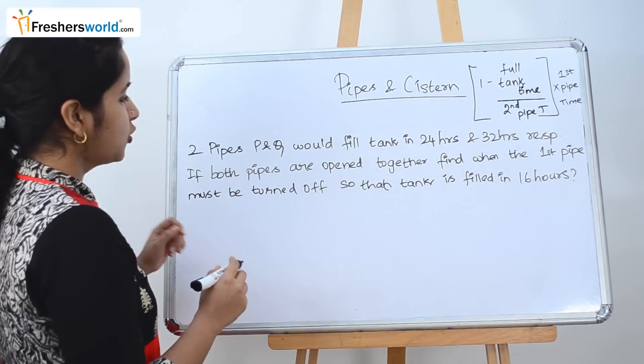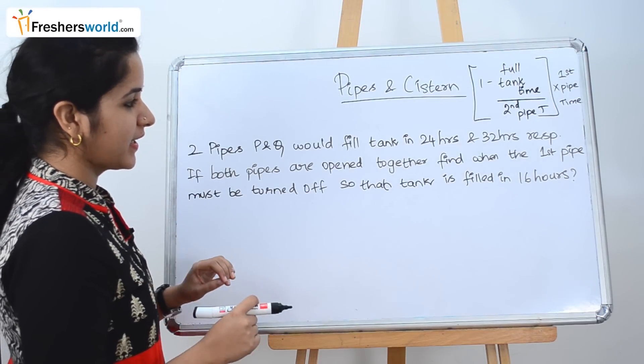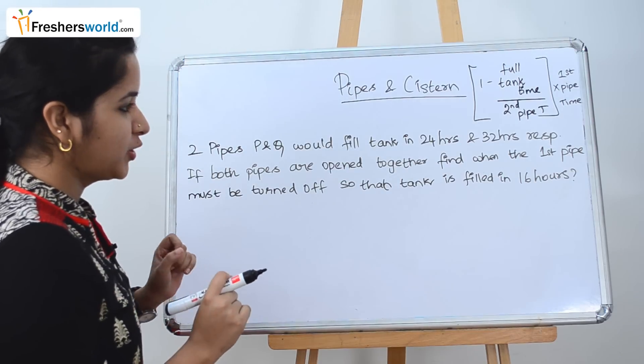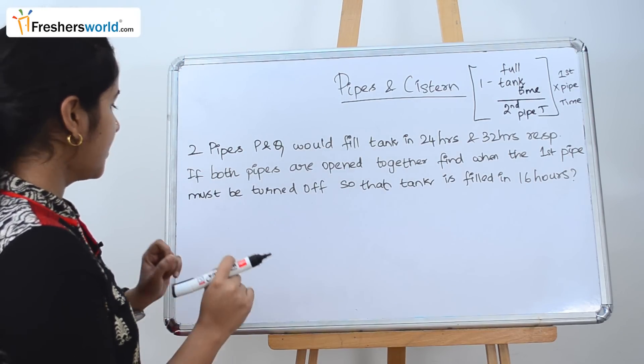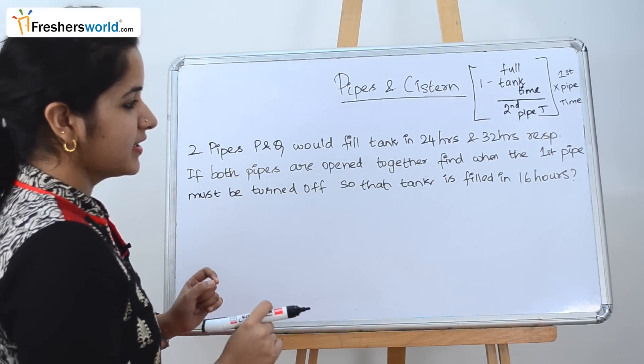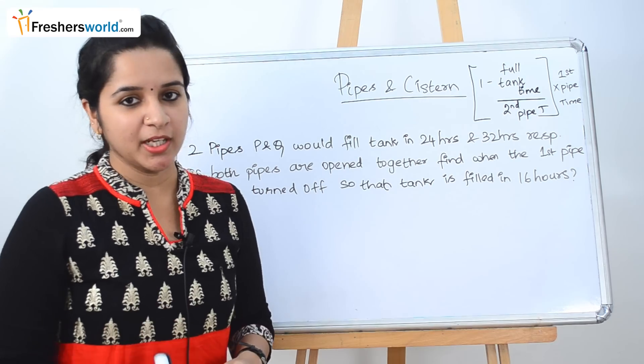So the question that they have given is: two pipes P and Q would fill a tank in 24 hours and 32 hours respectively. If both pipes are opened together, find when the first pipe must be turned off so that the tank is filled in 16 hours. This is a very common type of problem.